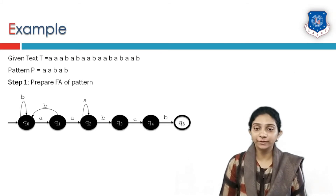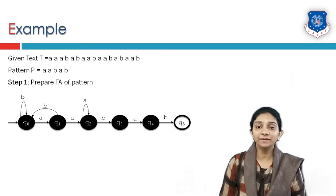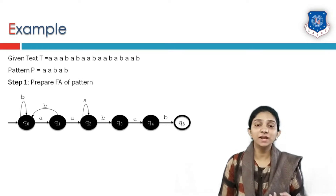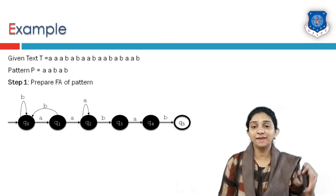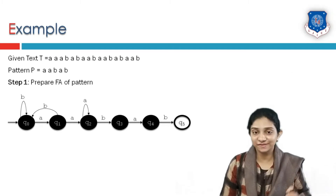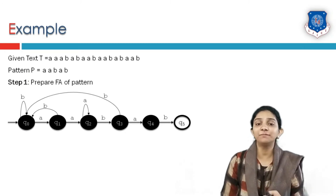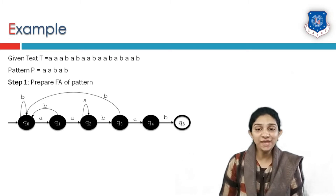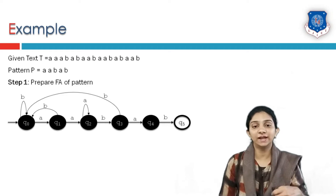Now consider state q3. From q3, if the input symbol is A it leads to state q4. But what if at state q3 the input is symbol B? The text would look like AABB, which does not match our pattern. We have to start pattern matching from the very first character, so transition on B from q3 leads back to the starting state q0.